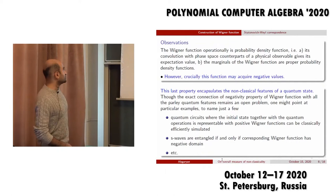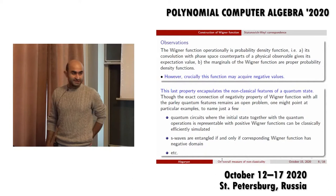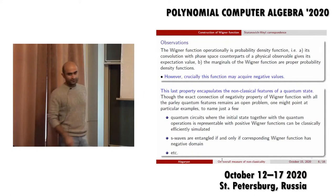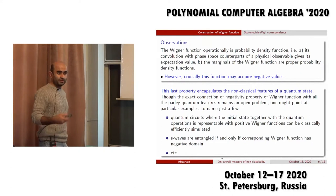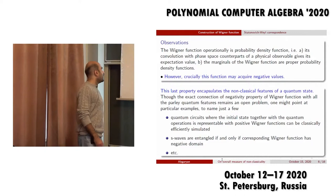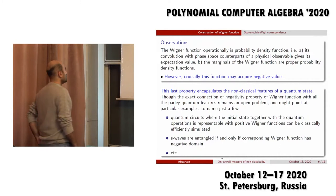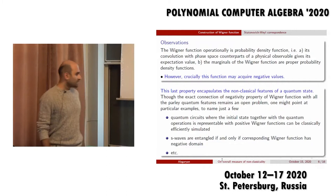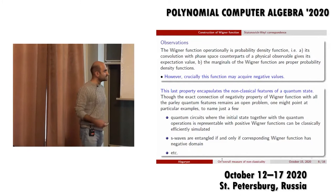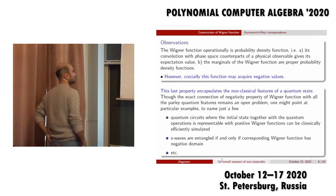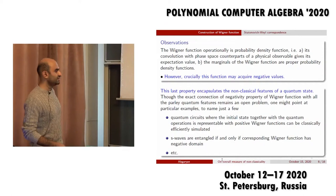The Wigner function can be used operationally as a usual probability density function. Its convolution with the symbols of physical observables gives their expectation values. The marginals of this Wigner function are proper probability density functions. However, crucially, this function acquires negative values. Basically, this last property encapsulates the non-classical features of quantum states. Even though all non-classical behavior is a kind of surprise for us, in the cases when we know about these non-classicality behaviors, we see that it is somehow reflected in the property of the Wigner function to have negative values.